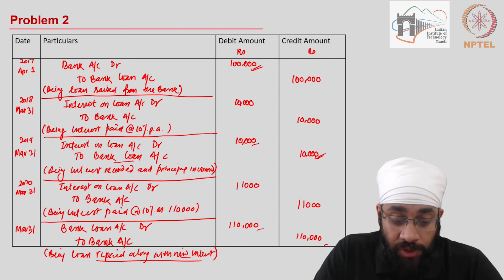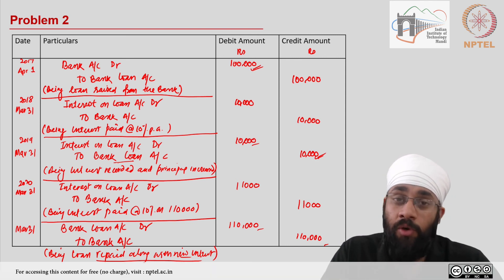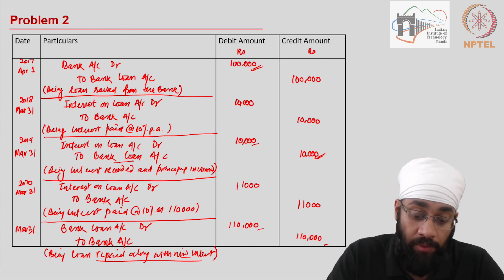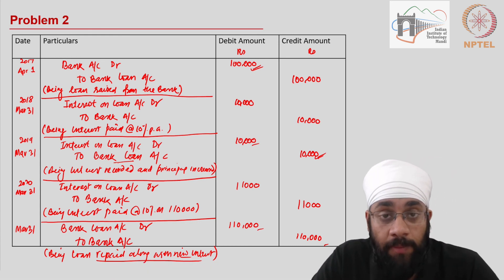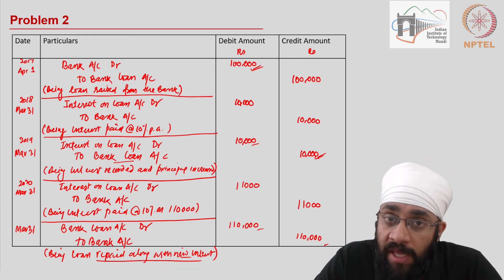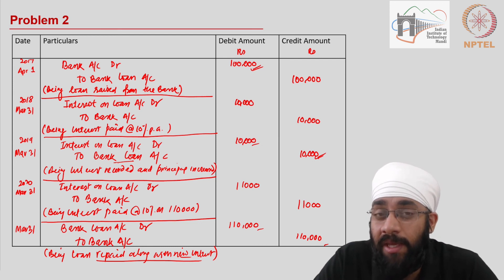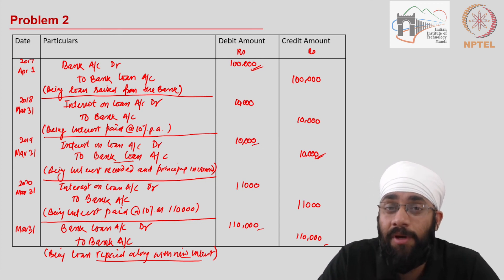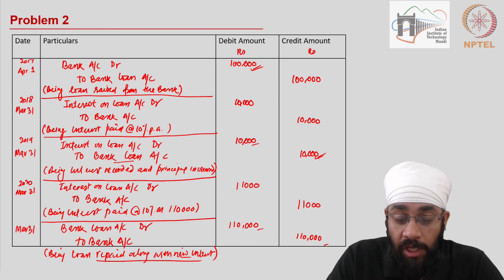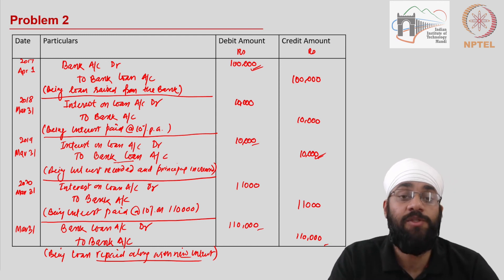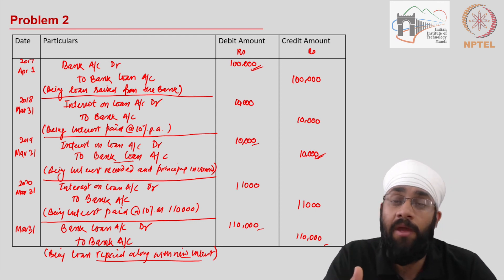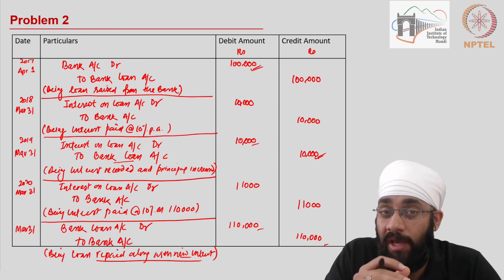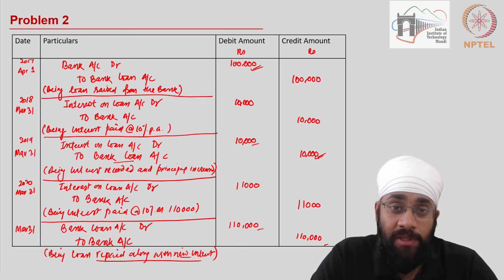That is how you record a loan transaction over its full tenure — these are all the general entries that take place. These can become more complex if you have EMIs which include both interest and principal, but those are more advanced cases. If you understand this logic, you can apply it to any other scenario. See you in the next video.